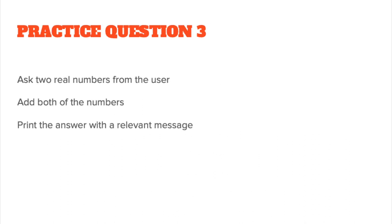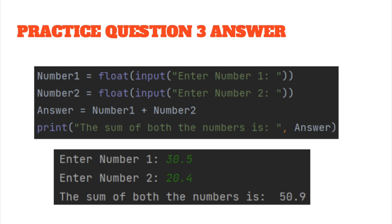In practice question 3, ask two real numbers from the user, add both numbers, and print the answer with a relevant message. You should have comment statements defining number1 and number2 which store float input from the user. Answer will add number1 and number2 — that should also be float. Then simply print with an appropriate prompt. If you typed in 30.5 and 20.4, you should get an answer of 50.9.